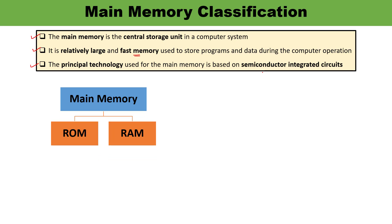Main memory may be of two types: ROM and RAM. ROM is read-only memory and RAM is random access memory. ROM is used to store programs permanently which reside in the computer. RAM chips are available as static and dynamic.